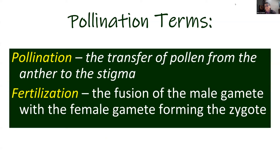Let me quickly review some pollination terms. Pollination is the transfer of pollen from the anther — the male portion of the flower — to the stigma, which is the female portion. Once pollen lands on the stigma, the pollen grain germinates and grows down to the ovule. Fertilization, needed for fruit set, is the fusion of the male gamete from the pollen grain with the female gamete in the ovule, forming the zygote, which eventually forms the seed.